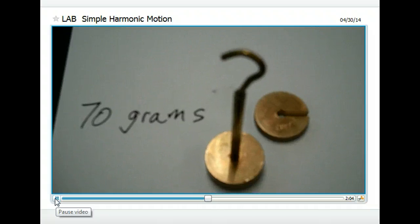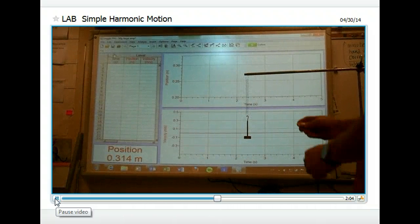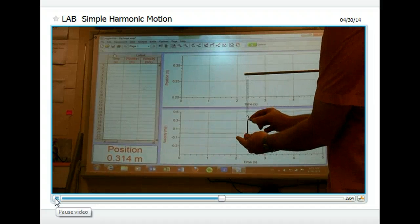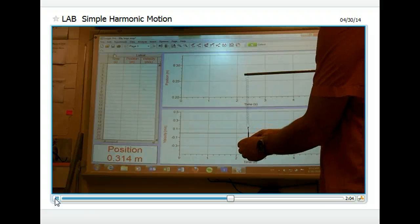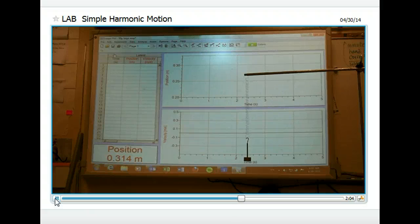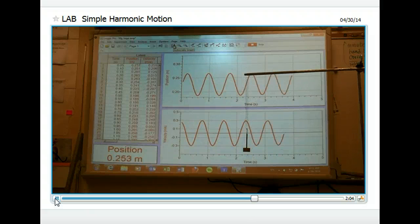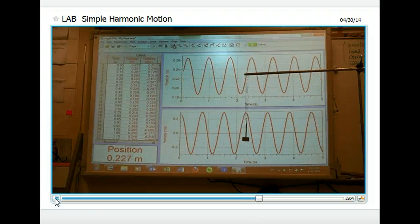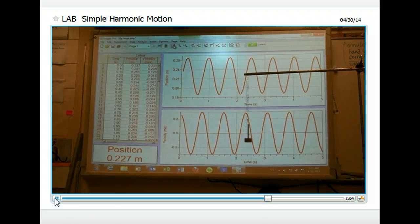Now we're going to add 20 grams and do the experiment again. So now we have a larger mass on the same spring. Set it in motion and record our data. Once it's done, I'll auto scale the data. That data file will be provided to you.